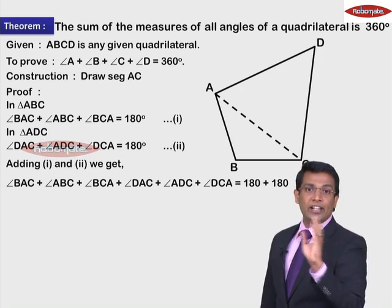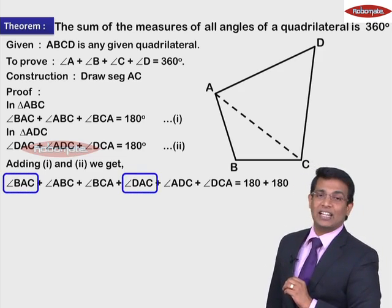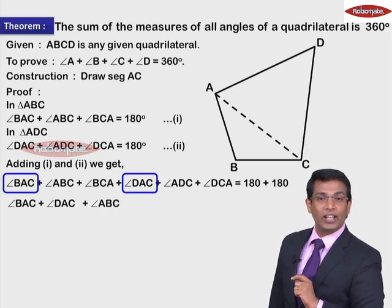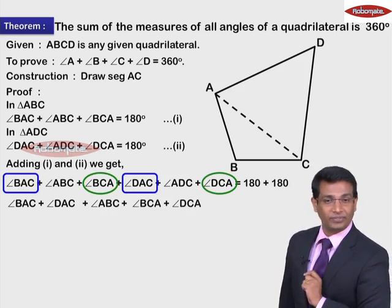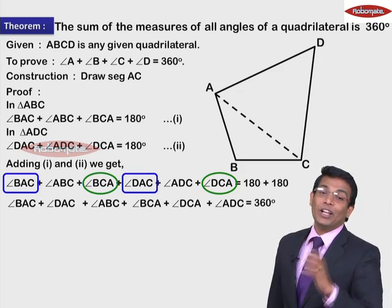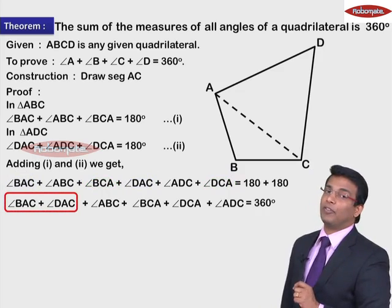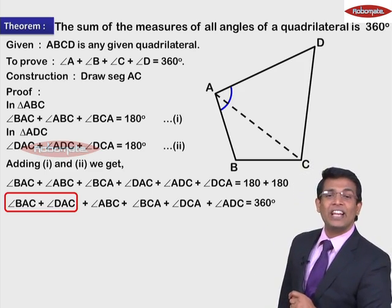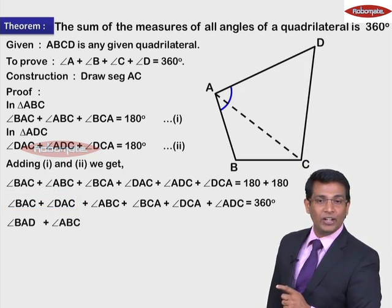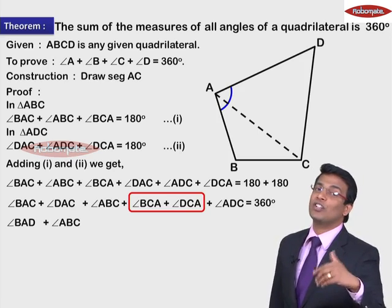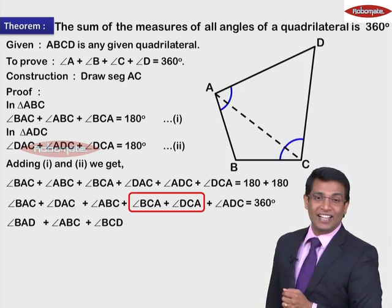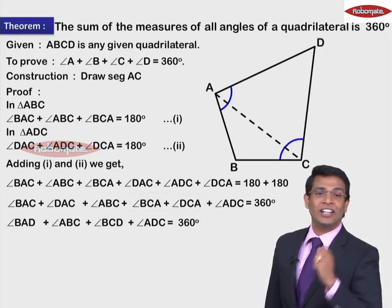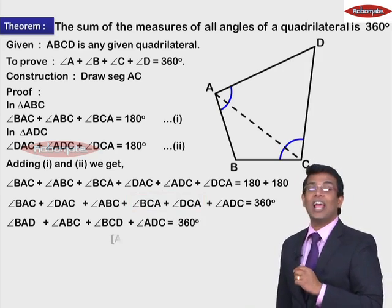Now let's arrange the terms. Angle BAC and angle DAC — we can take them together. Angle ABC would remain as it is. Angle BCA and angle DCA — we take them together. That equals 360 degrees. Observe that angle BAC plus angle DAC together gives angle BAD, and angle BCA plus angle DCA together gives angle BCD. The reason for combining these is the angle addition property.